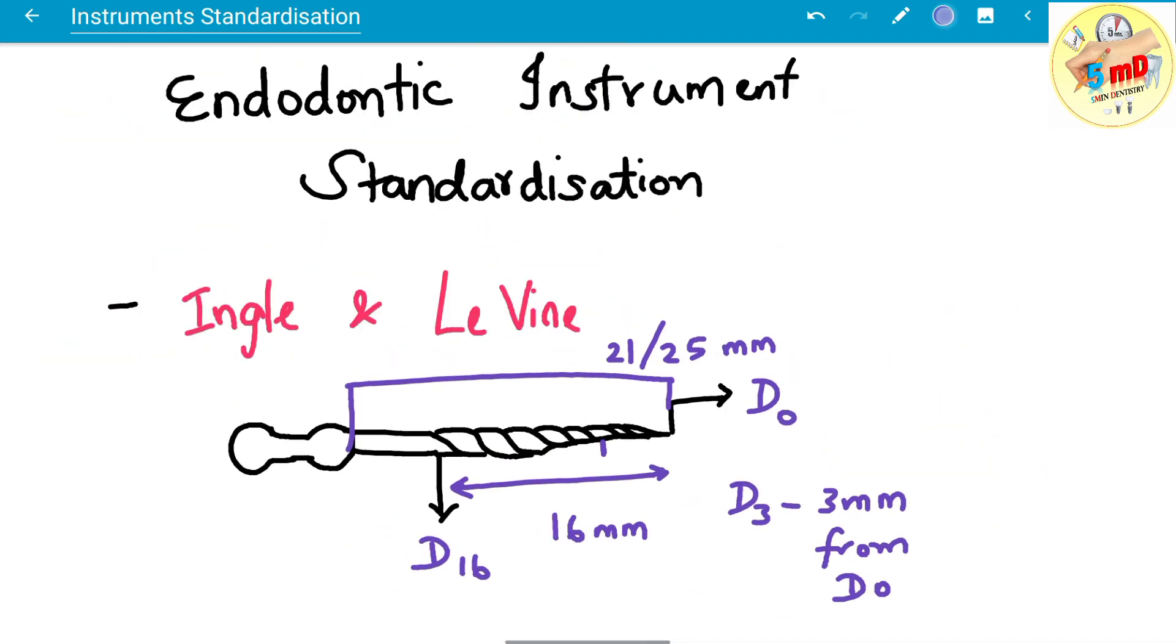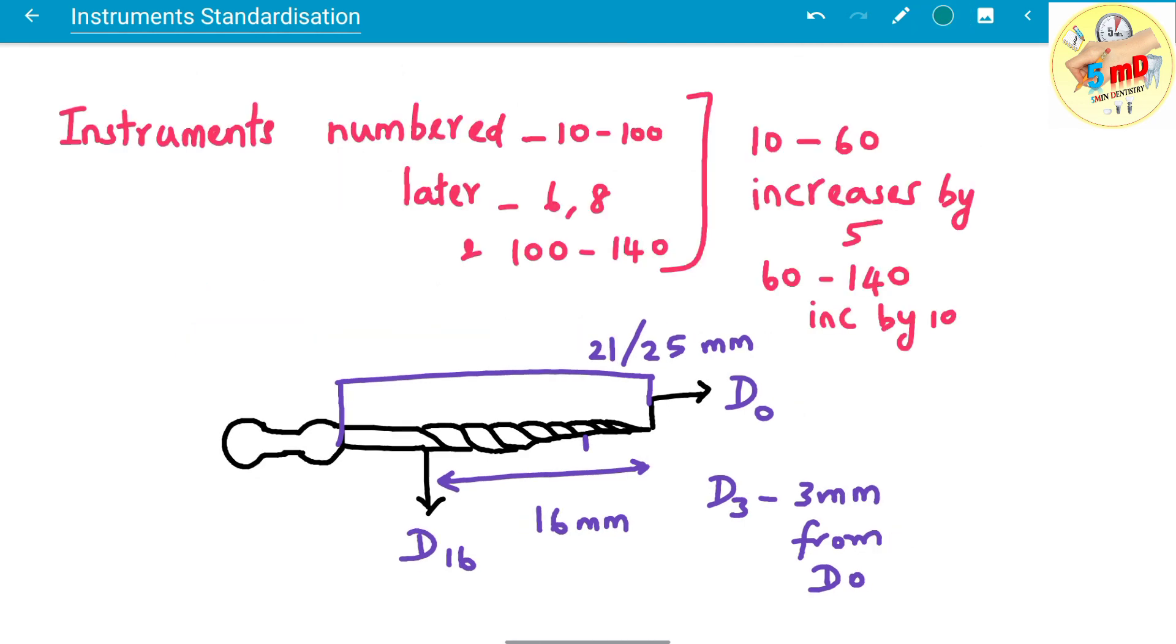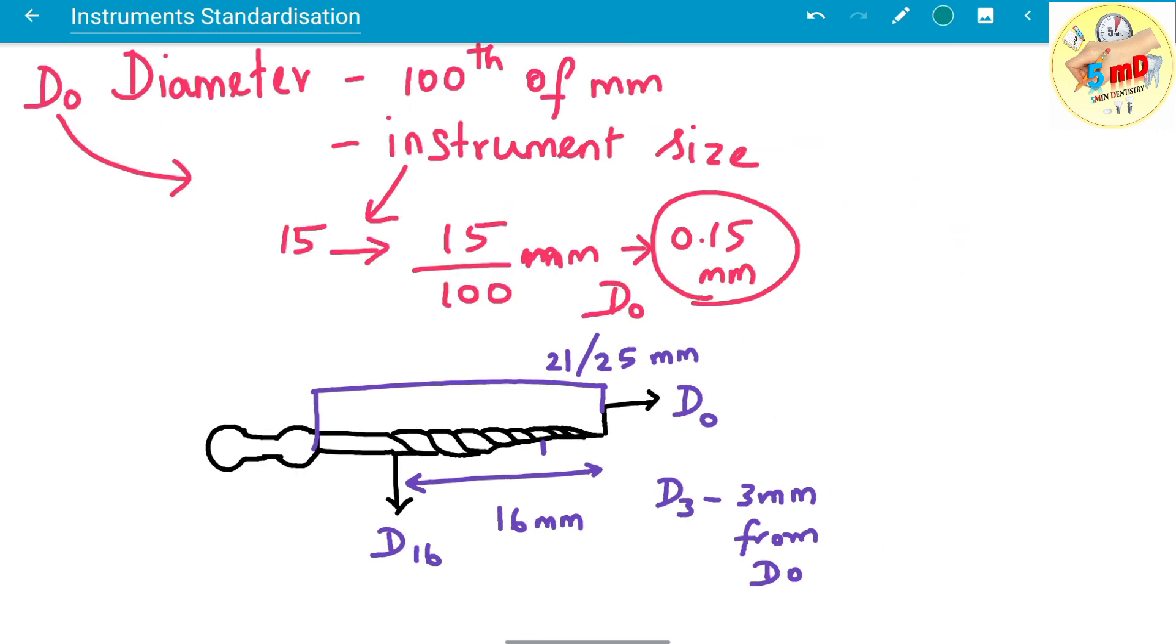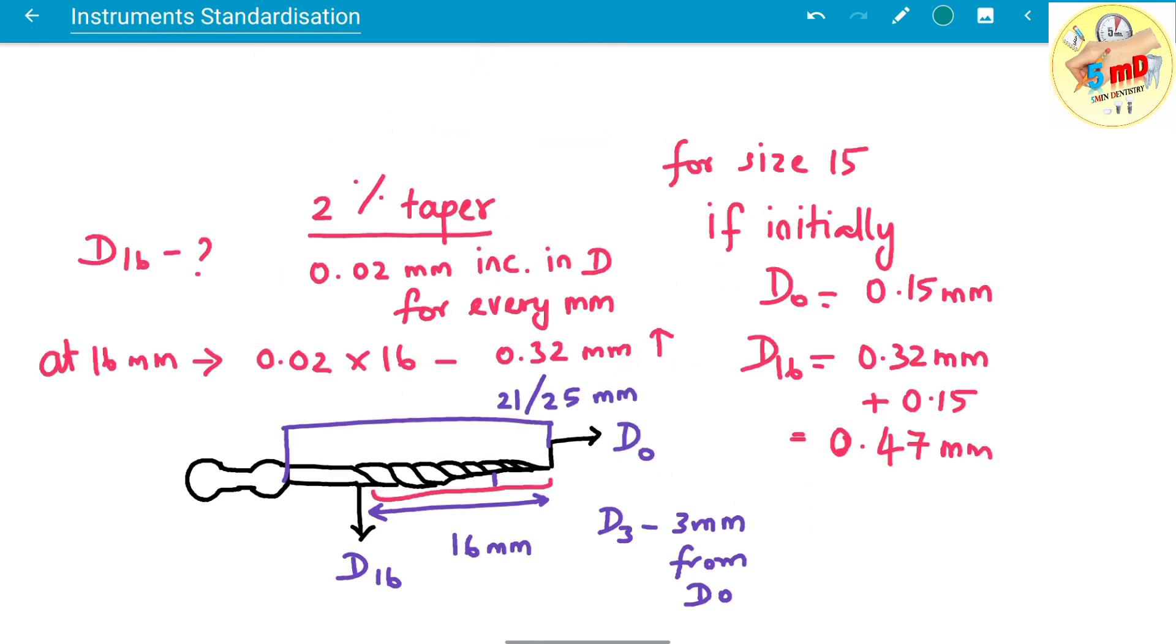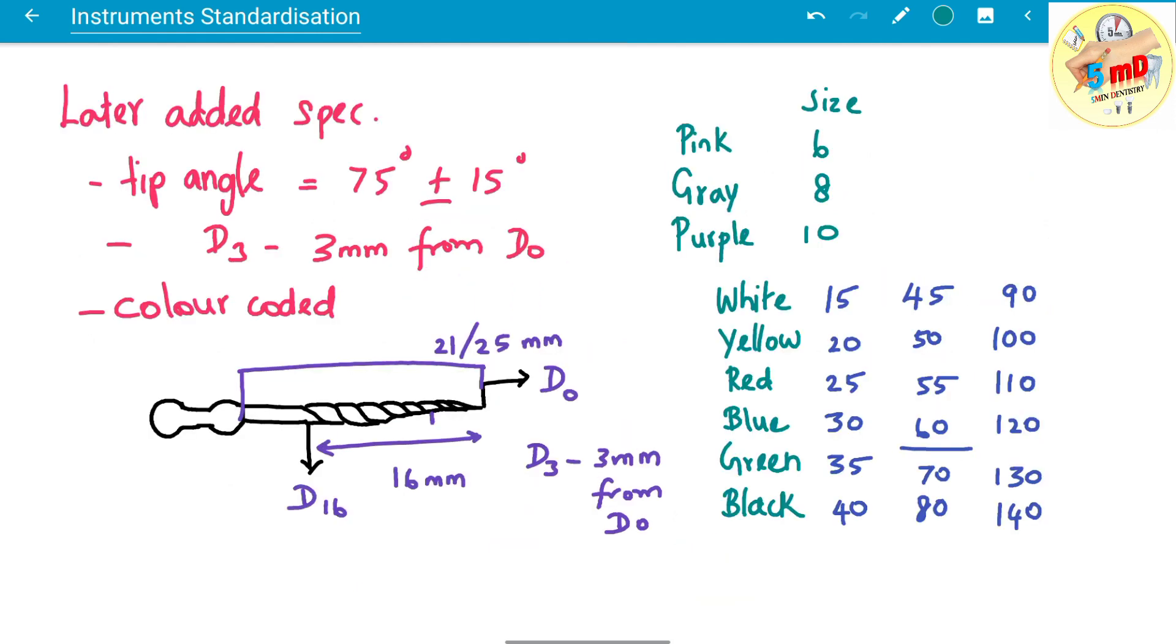To recap, Ingle and Levine standardizations include d0 and d16, numbering from 6 to 140, increase in 5s for 10 to 60 and increase in 10s for 60 to 140, diameter at d0 and d16 with respective calculations for 2% taper, and finally the color coding for each size of the instrument and the angulation at the tip of the instrument.